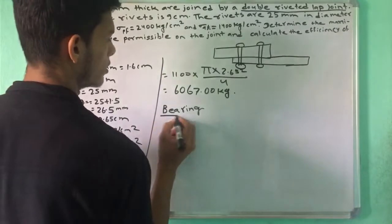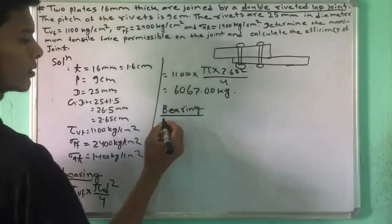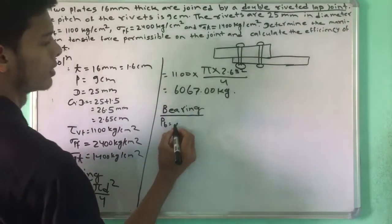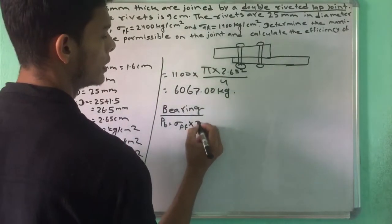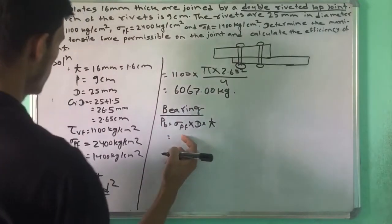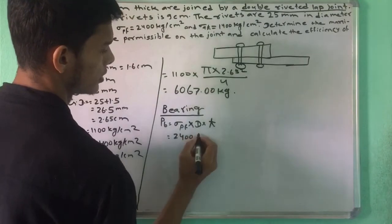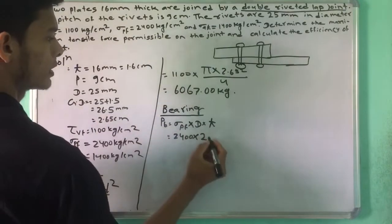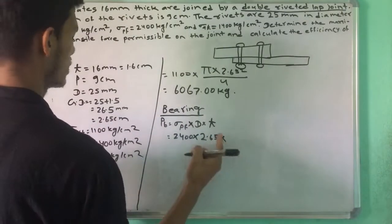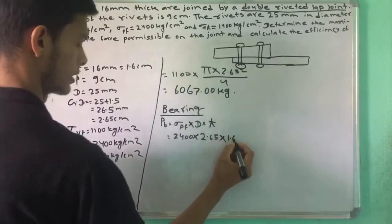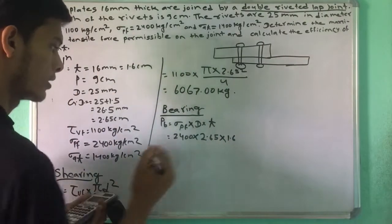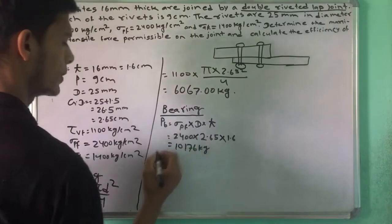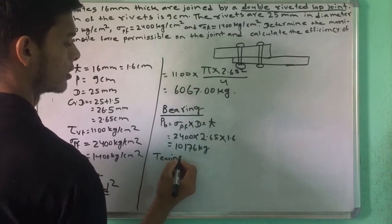This is the bearing calculation. P bearing is equal to Sigma_P into D into t. Sigma P is equal to 24. D is equal to 2.65, t is equal to 1.6, giving a bearing value of 10176 kg.